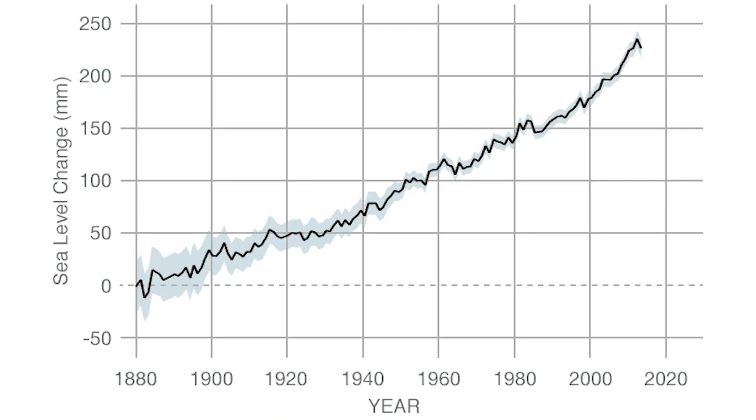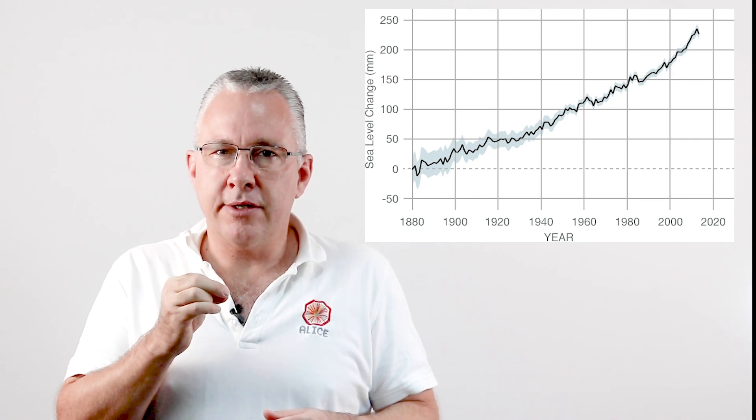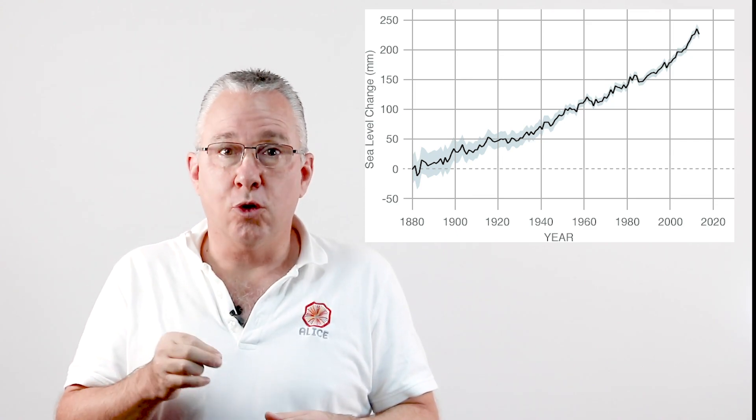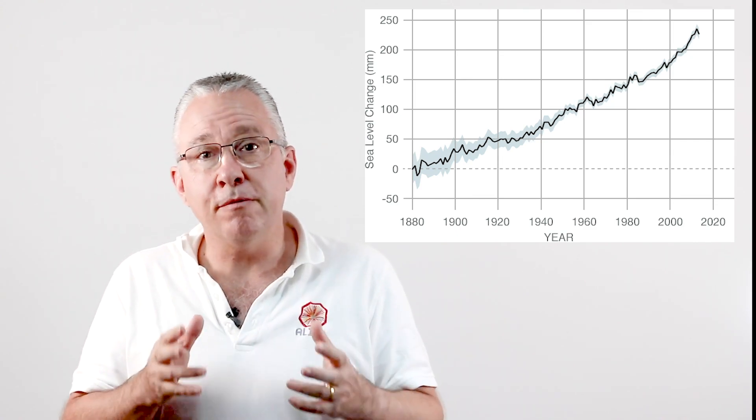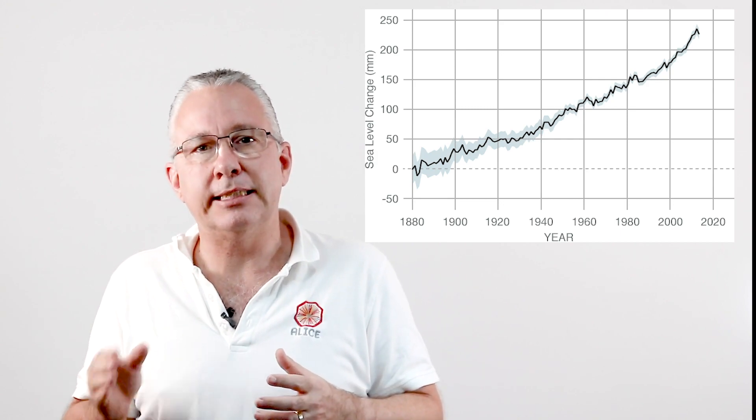This graph from the CSIRO shows the average sea level since 1880. The green region shows the confidence range, and you'll note that as we approach recent times this precision increases. The first thing you should note is that there is an upward trend. Sure, there are local fluctuations, but the overall trend is an increasing sea level.